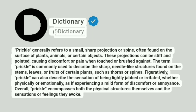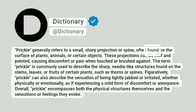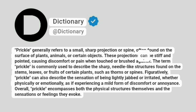Dictionary. Prickle generally refers to a small, sharp projection or spine, often found on the surface of plants, animals, or certain objects. These projections can be stiff and pointed, causing discomfort or pain when touched or brushed against.